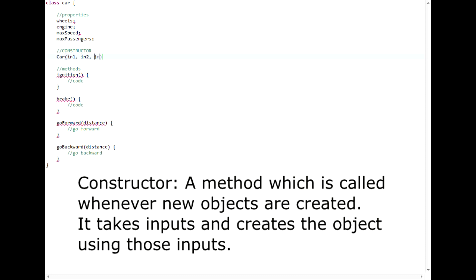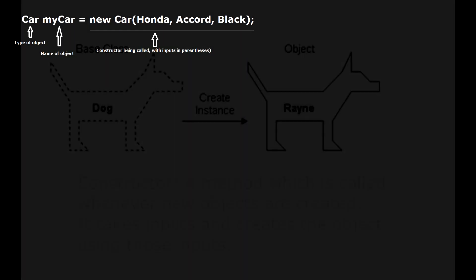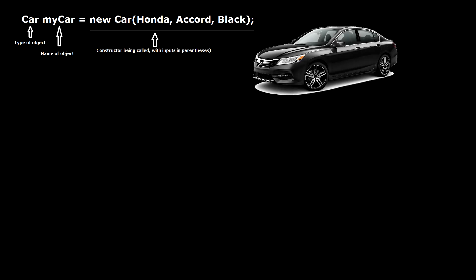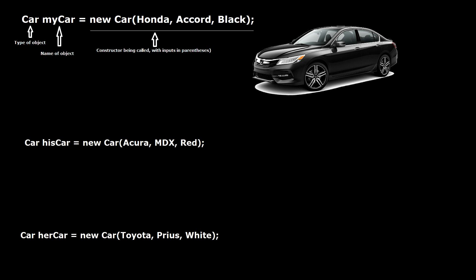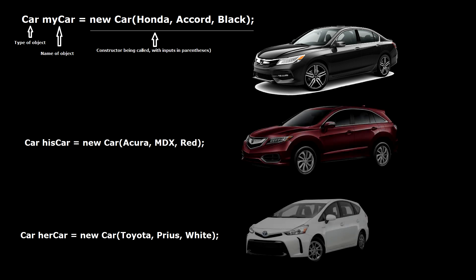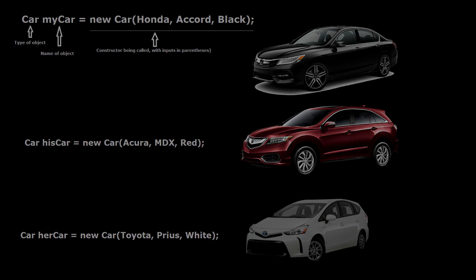Methods, like any functions in math, can take inputs, and the constructor is no exception. The constructor can take inputs which can be used to make instances of an object specialized and different from one another. In this car example, these are used to set the make, model, license plate number, etc. Through feeding different inputs to the constructor, multiple unique car objects can be created from a single car blueprint. This in itself is a very modular way to program, but it gets even better.